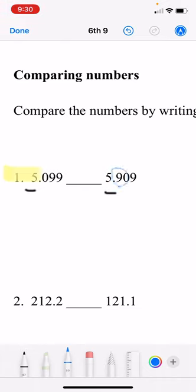Okay. So we have 5.099 and then 5.909. Well, nine is greater than zero, right? So then 5.9... Sorry. 5.099 is less than 5.909.